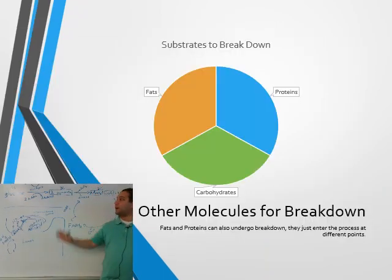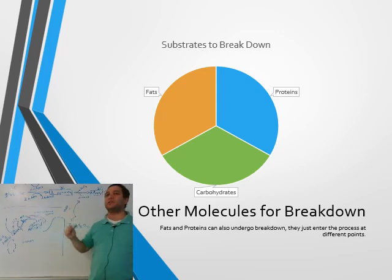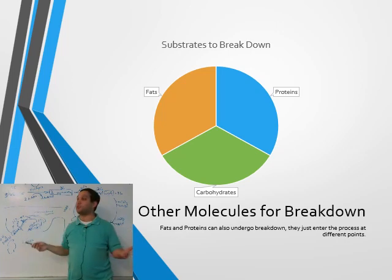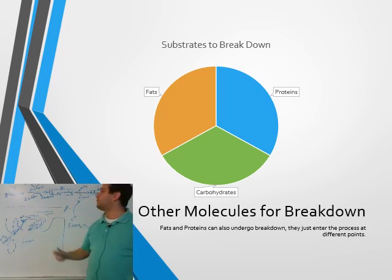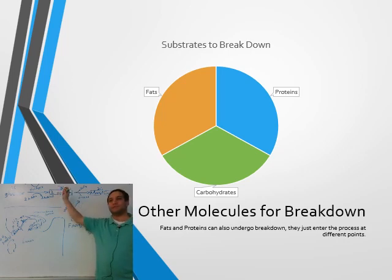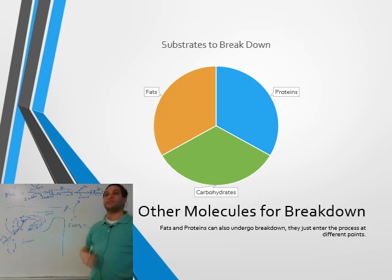It's important to note this process is not only for glucose. Other molecules come in at different stages — you cannot live on sugar alone. Carbohydrates, fats, and proteins are all broken down, but they come in at different stages of the pathway. You'll eventually end up with the same basic parts, but you have to break them down a little to get there. They might enter after pyruvate or further into the Krebs cycle.